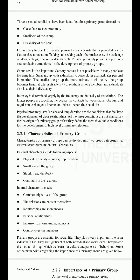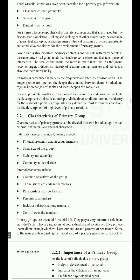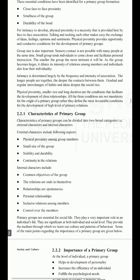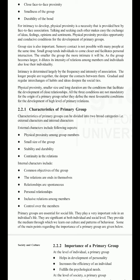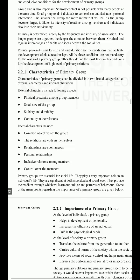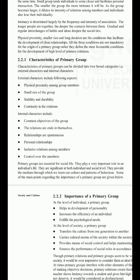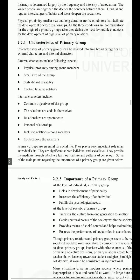Characteristics of the primary group can be divided into two broad categories: external and internal. External characters include physical proximity among group members, small size, stability and durability, and continuity in relations. Internal characters include common objectives, relations that are ends in themselves, spontaneous personal relationships, inclusive relations among members, and control over members. Primary groups are essential for social life and play a very important role in an individual's life at both the individual and social levels.